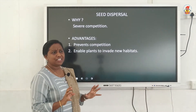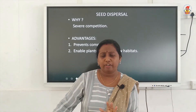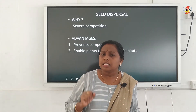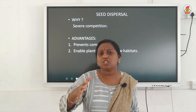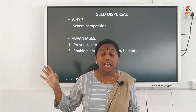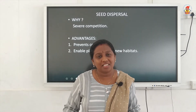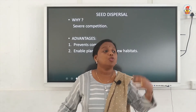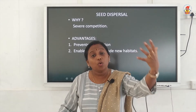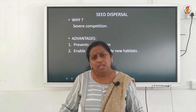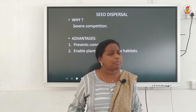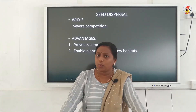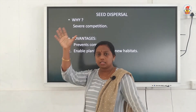Finally after fertilization a seed is formed — the ovule develops into a seed. Now what will happen to the seed? The seed has to be somehow dispersed — it has to move away from the parent plant. The seed will be inside the fruit, and this seed has to move away to new places so that it can germinate into a new plant. But why should the seed move away from the parent plant?